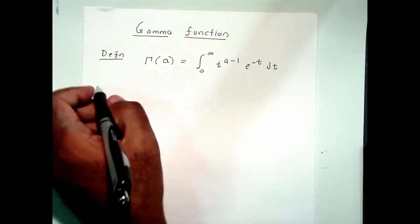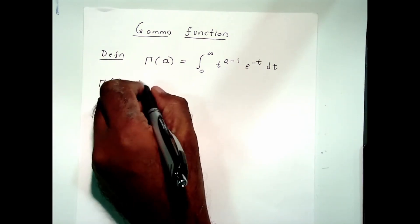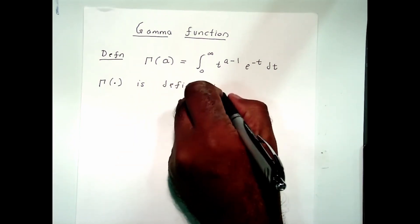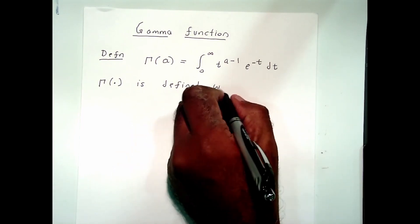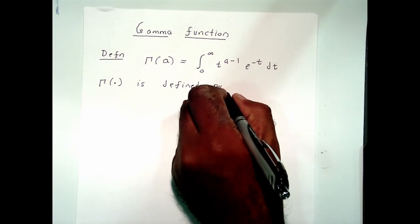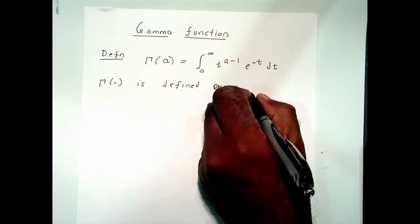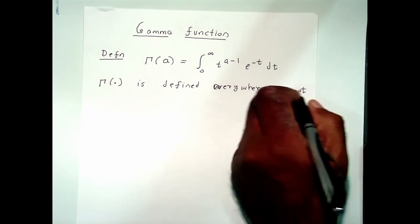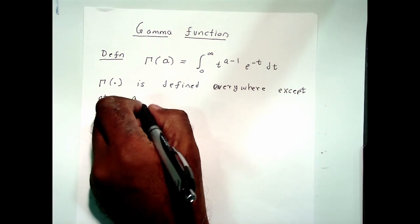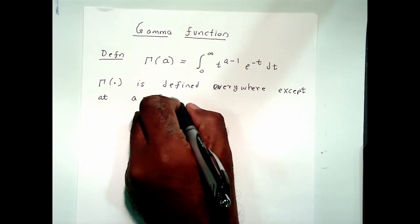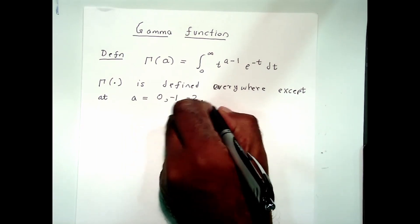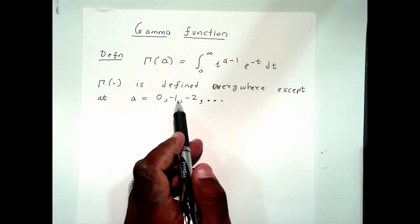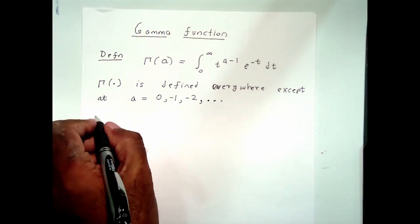This is the definition and the gamma function is defined everywhere except at a equal to 0, minus 1, minus 2, etc. So this function here is defined everywhere except when a is equal to 0, minus 1, minus 2, etc.